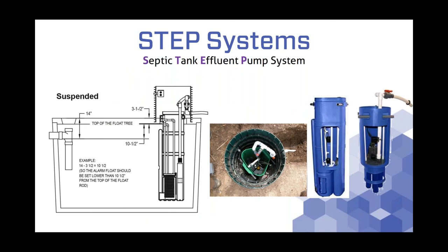STEP systems are typically what we'll use, installed inside a separate pump tank or sometimes a two-compartment septic tank. We install these rotomolded plastic vaults — typically 60 inches in height, but available in various heights depending on the pump tank depth. They're installed and hung on the inside of the pump tank, as you can see in the cross-section on the left. The key feature is a turbine pump inside; sometimes a centrifugal pump depending on the version.